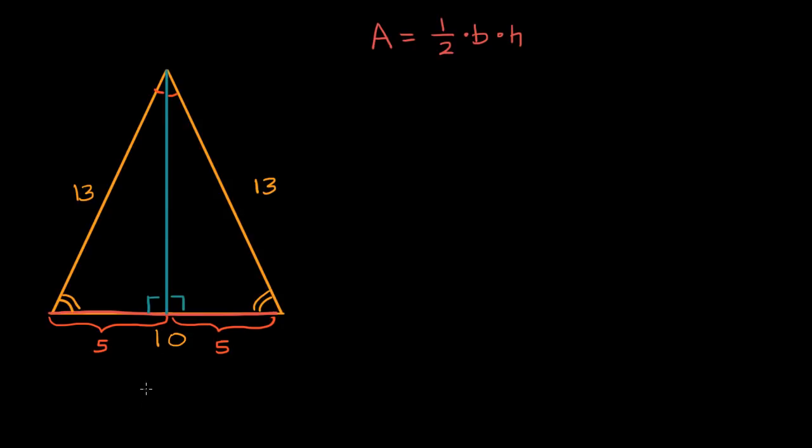Now we can use the Pythagorean theorem to figure out the length of this blue side, or the height. If we call this h, the Pythagorean theorem tells us that h squared plus 5 squared is equal to 13 squared. Five squared is 25, thirteen squared is 169.